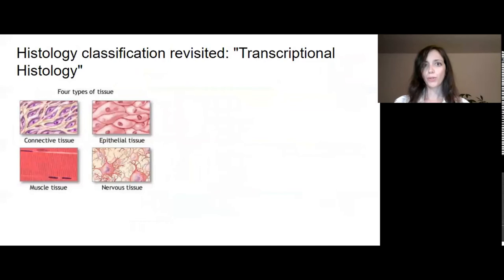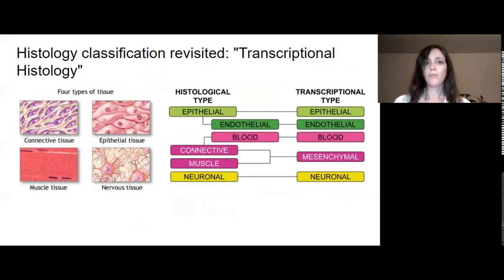If you search on Google or read a histology book in your medical biology training, you'll see that the main classification of tissues is among the traditional four types: connective, epithelial, muscle, and nervous tissue. This is, of course, a very valid classification. What we propose is an additional layer of classification that's based on the transcriptome of the cells. So in the context of the classification that we proposed, we observed that endothelial cells, although histologically they are a subtype of epithelial cells, have a very distinct transcriptional profile. Same for blood cells, which are very different transcriptionally from the other mesenchymal cells. We observe more similarities between other connective tissue cells and muscle cells, which we collectively refer to as mesenchymal.